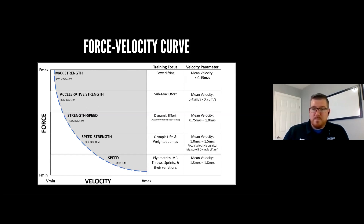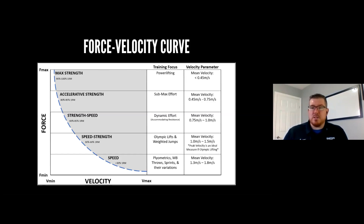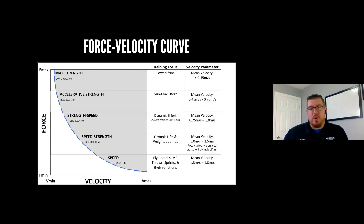This will vary based on experience and whether it's an upper or lower body exercise. For accelerative strength, moving towards the velocity end, we're training between 0.45 and 0.75 meters per second. Strength-speed is 0.75 to 1.0, speed-strength is 1.0 to 1.5, and speed is 1.3 to 1.8 meters per second — and can definitely be faster than that.